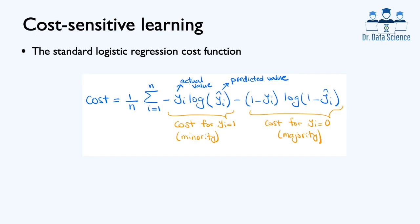Note that in machine learning, the goal is to minimize the cost function or loss function. In cost-sensitive learning, we modify the cost function to take into account that the cost of a false positive and a false negative may not be the same. Here we have the standard cost function for the logistic regression classifier, also known as binary cross-entropy loss.